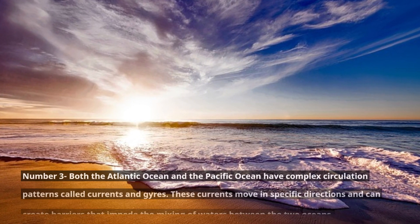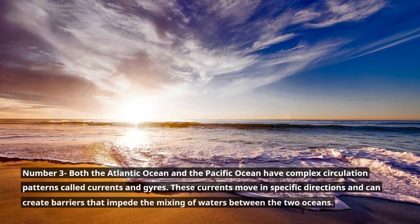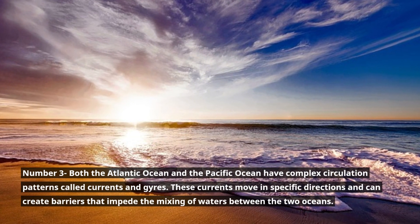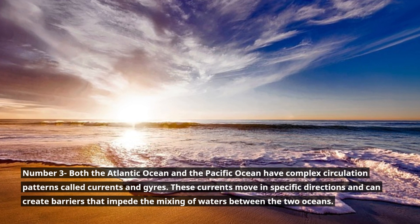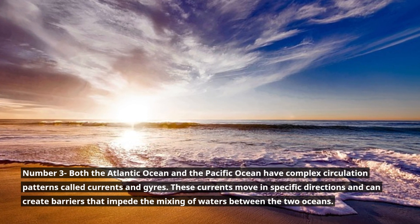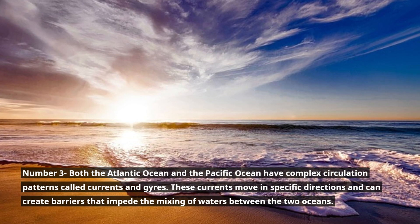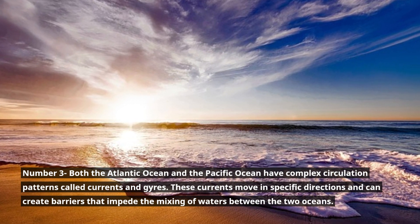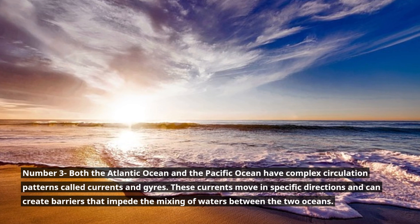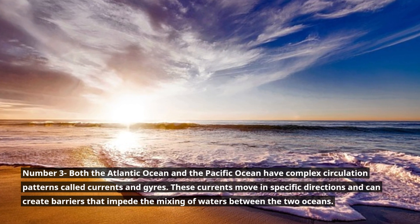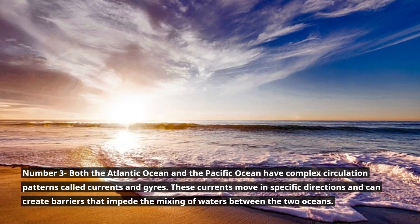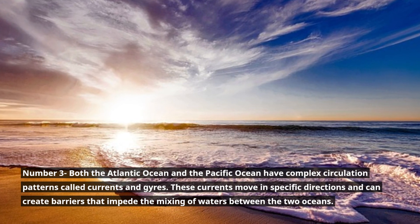Number 3. Both the Atlantic Ocean and the Pacific Ocean have complex circulation patterns called currents and gyres. These currents move in specific directions and can create barriers that impede the mixing of waters between the two oceans.